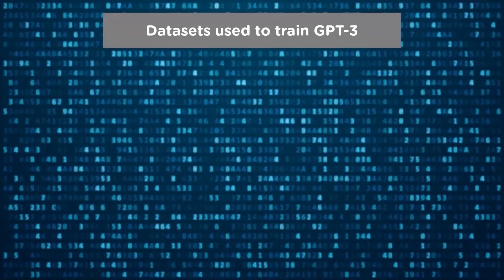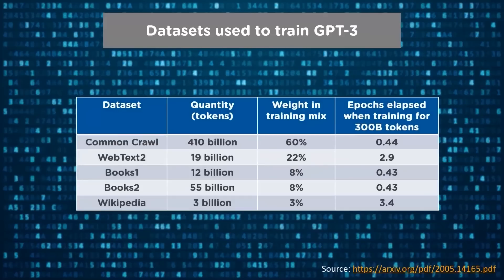Let's talk about the datasets that were used to train the GPT-3 model. A total of 5 datasets were used: Common Crawl, Web Text 2, Books 1, Books 2, and Wikipedia. The next column shows the number of tokens used in billions. GPT-3 models using 175 billion parameters are trained with 499 billion tokens in total, out of which Common Crawl, with 410 billion tokens, has 60% of the training data.